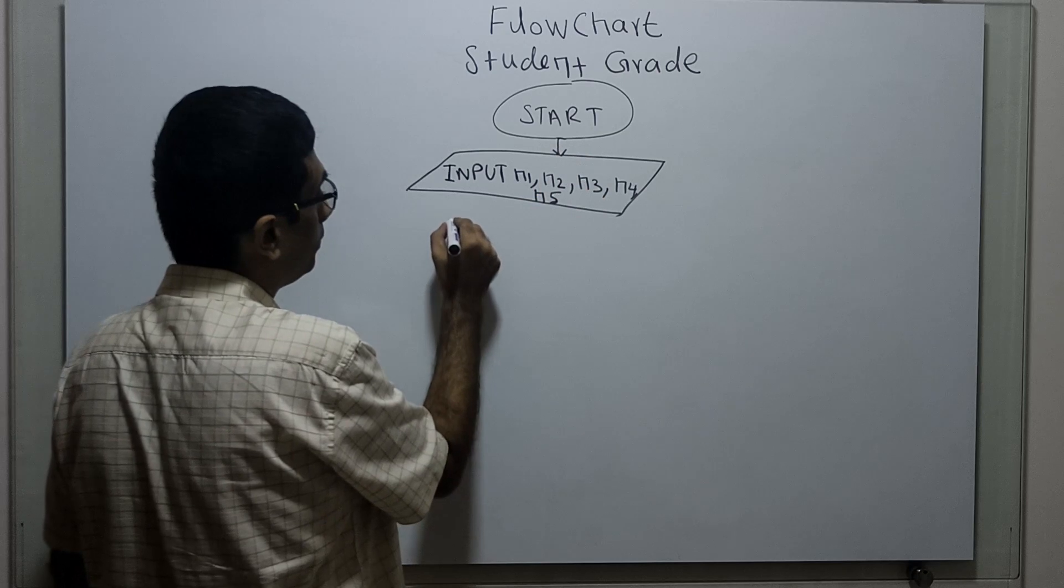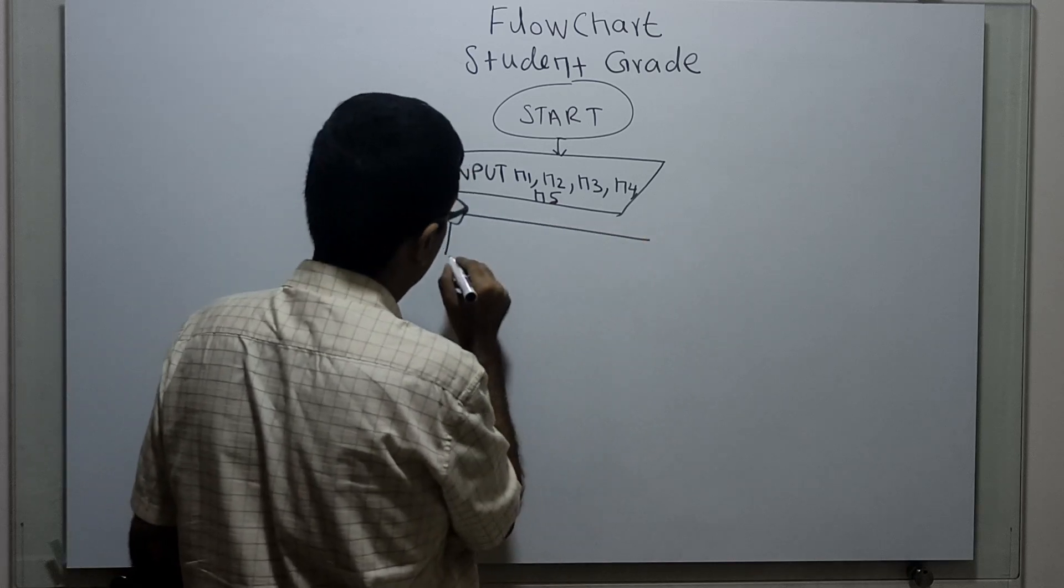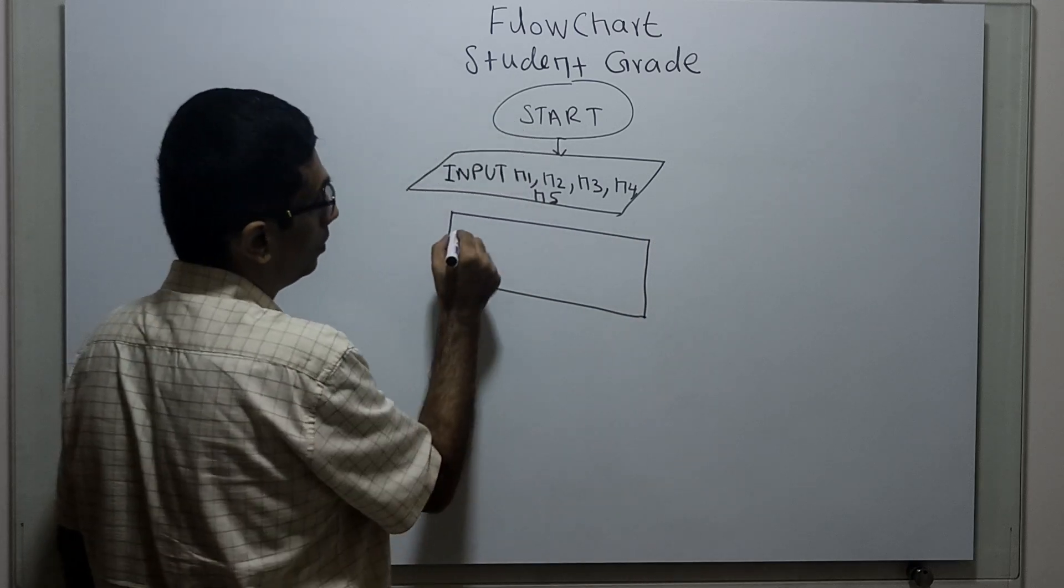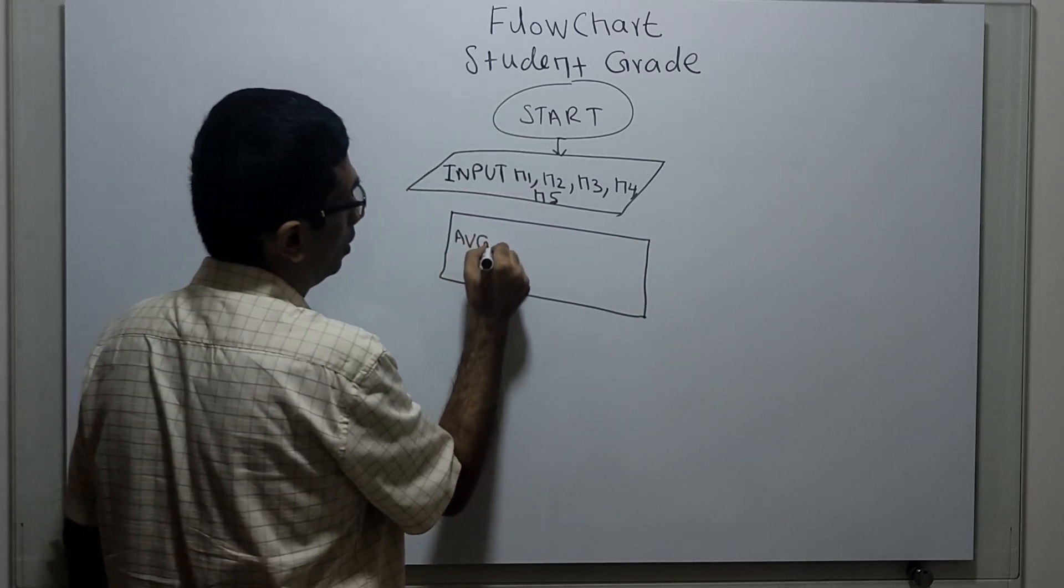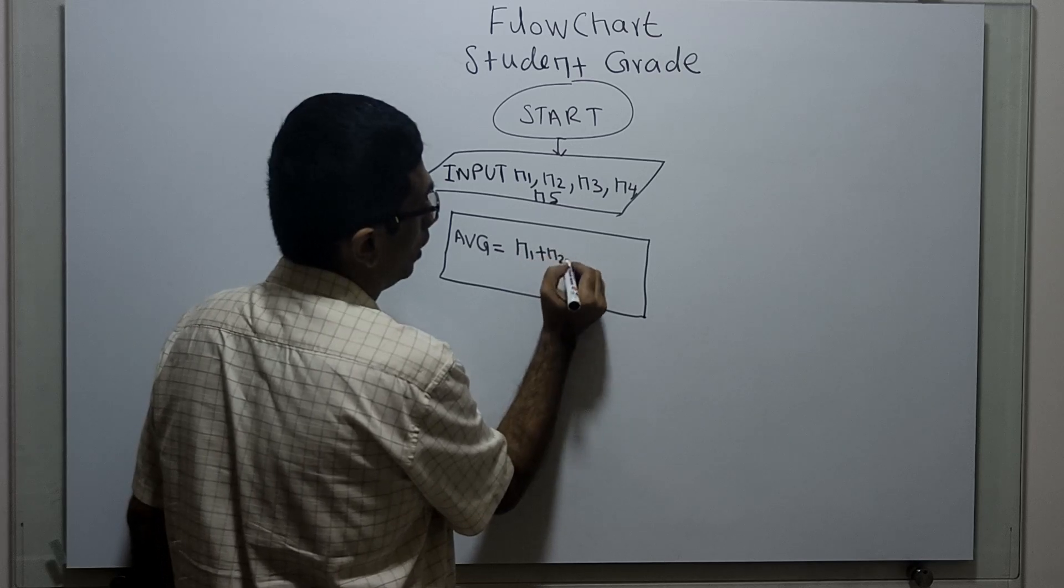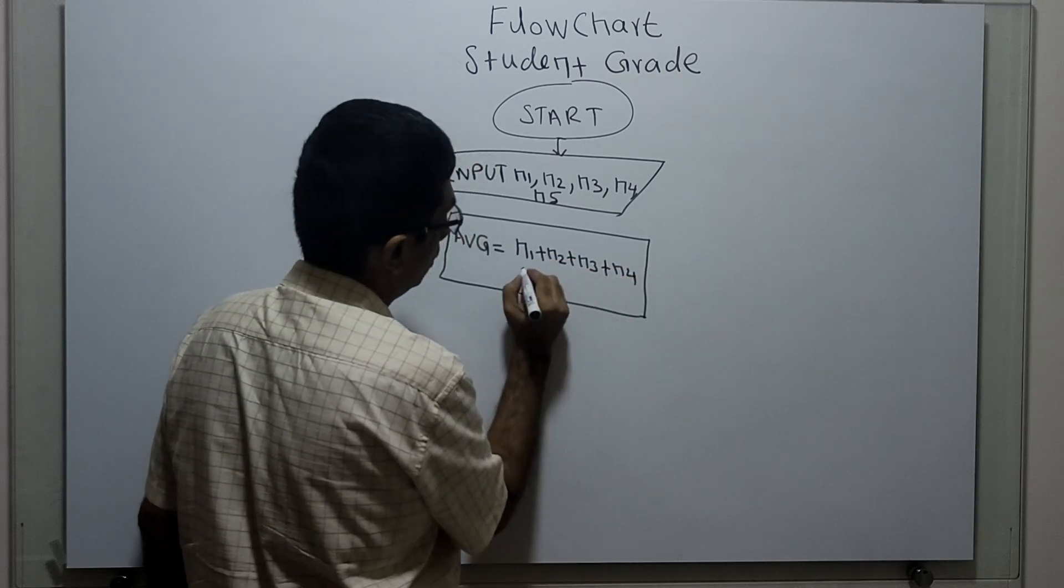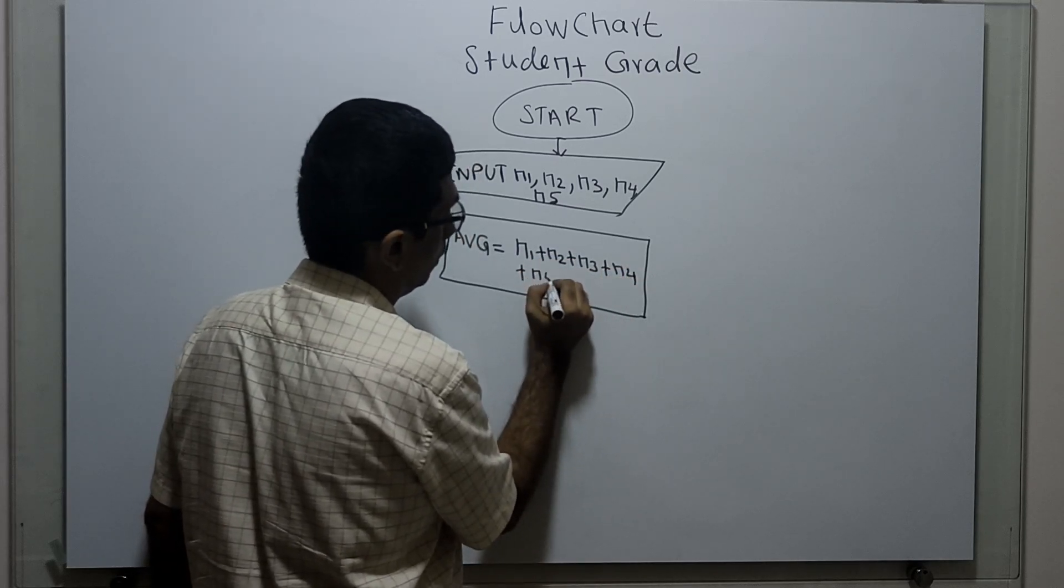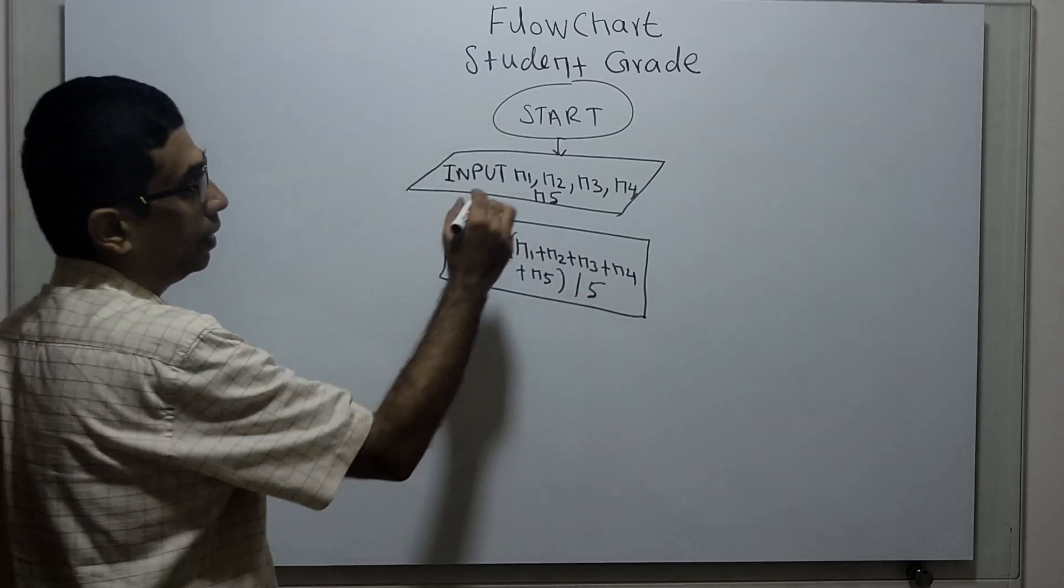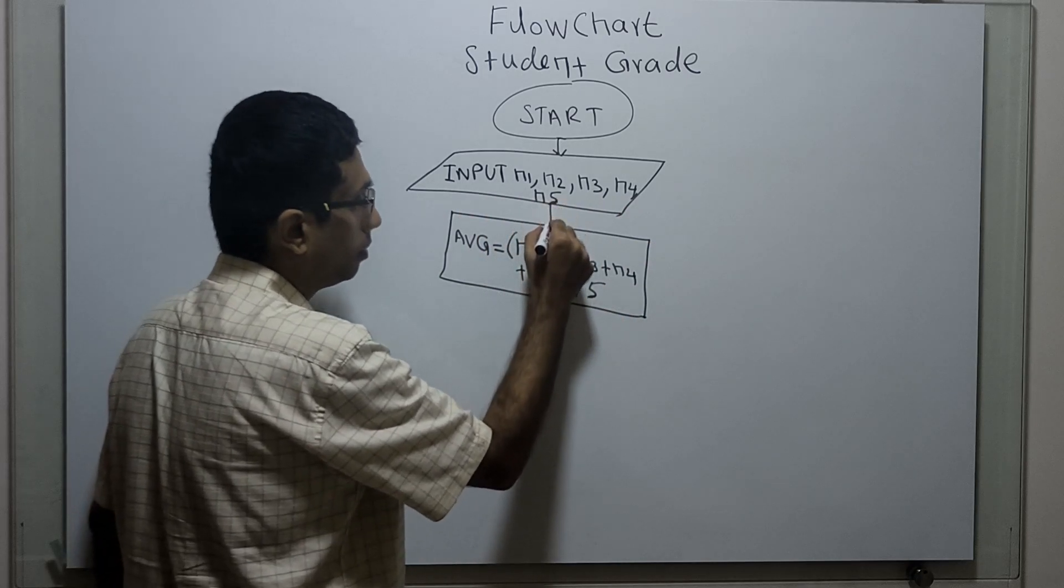I am calculating average: avg, a variable equal to n1 plus n2 plus n3 plus n4 plus n5 divided by 5. I am obtaining five subject marks and adding all the marks divided by 5 and getting an average.